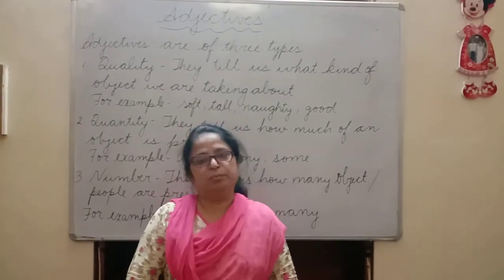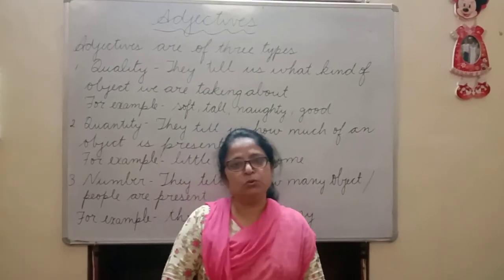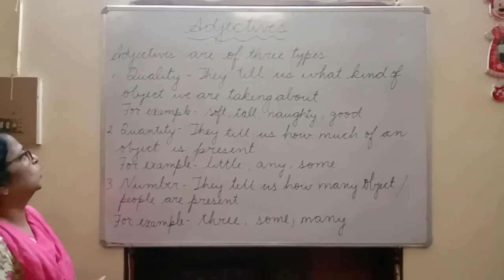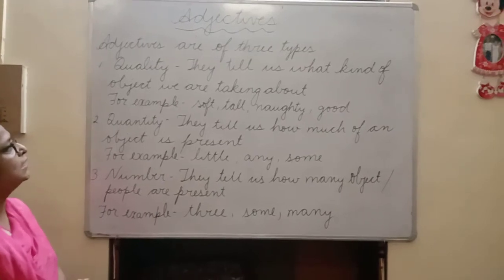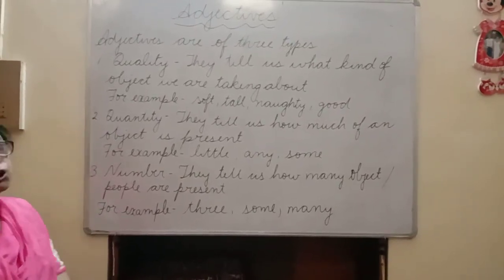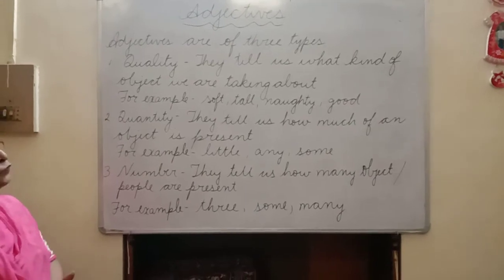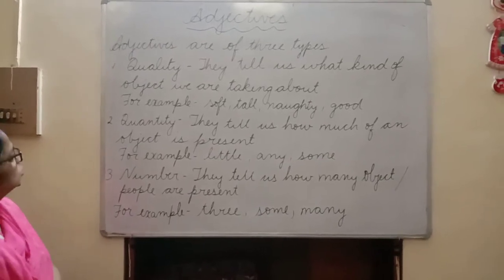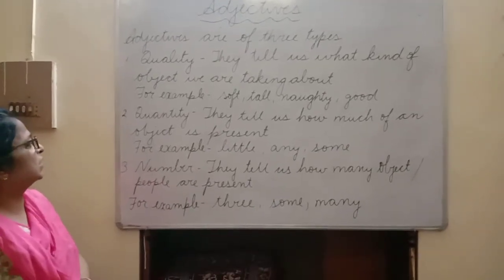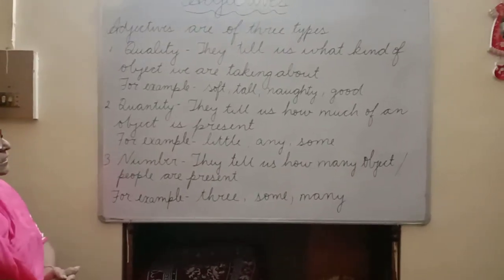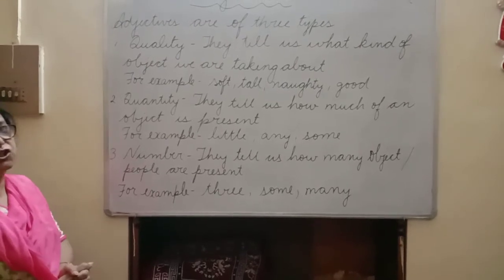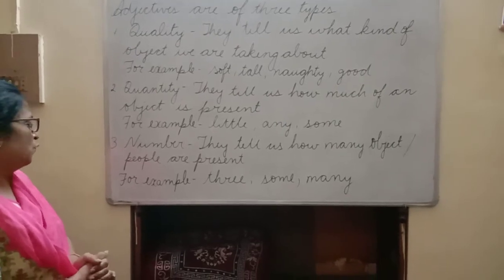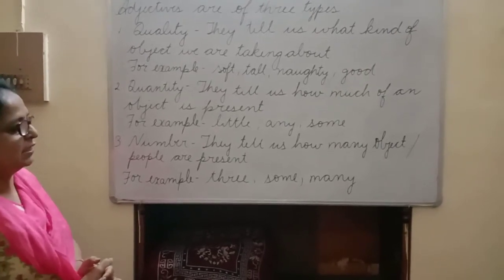Children, adjectives are mainly of three types. First is adjective of quality — they tell us what kind of object we are talking about; for example, soft, tall, naughty, good. The second is adjective of quantity — they tell us how much of an object is present; for example, little, any, some. And the third is adjective of number — they tell us how many objects or people are present; for example, three, some, many.